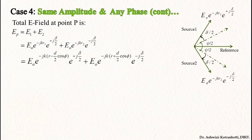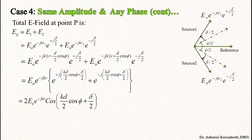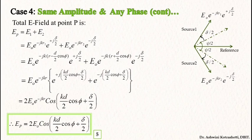After substituting the far field approximations in the phase terms, we separate out e raised to minus jkr and rearrange the other terms. The terms in the bracket can be substituted by cos of (kd/2 cos(phi) plus delta/2), from Euler's formula. So our net electric field at a distant point P is given by 2E0 cos(kd/2 cos(phi) plus delta/2).